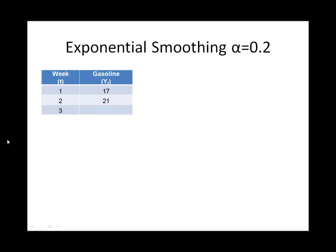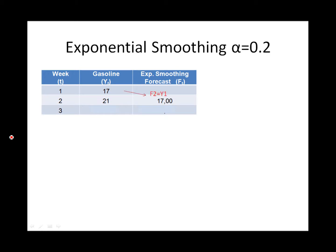Let's forecast gasoline prices using exponential smoothing and a smoothing constant alpha equals 0.2. We start with the forecast in week 2, which simply equals the actual price of gasoline in week 1. The forecast in week 3 can now be calculated based on the actual and forecasted values in week 2.